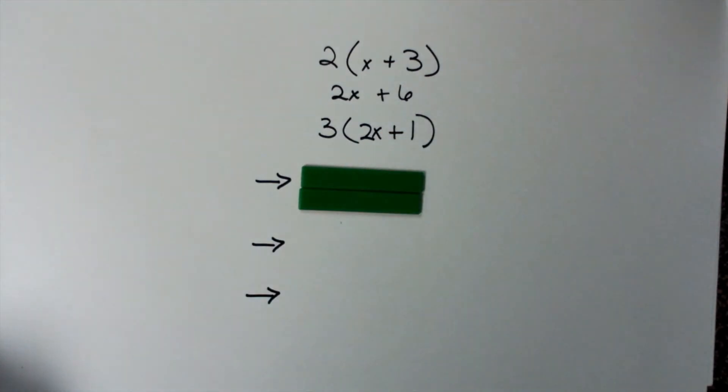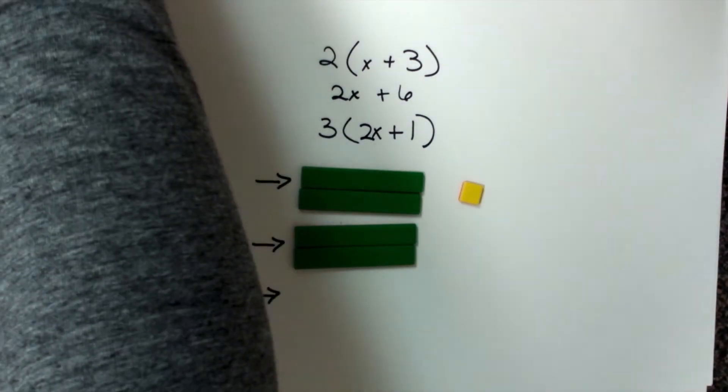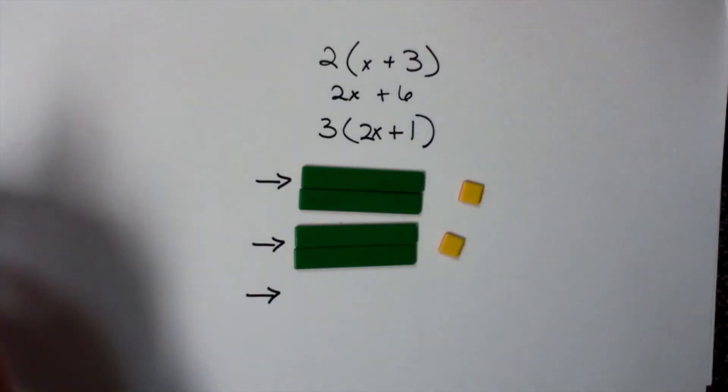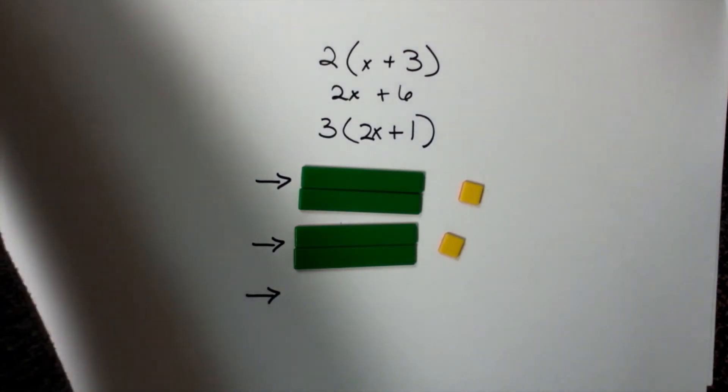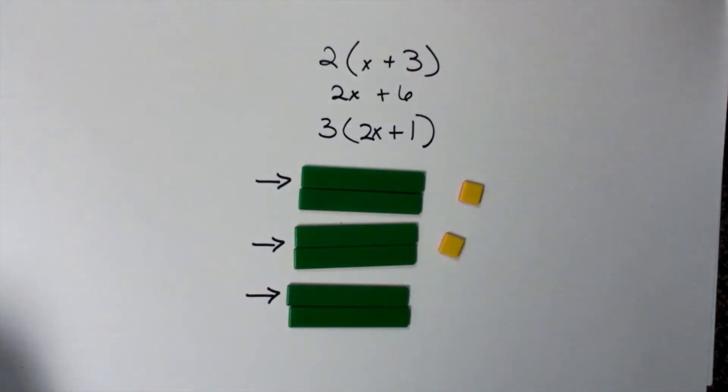So 2x plus 1. 2x plus 1. Again, 2x, and remember they're positive. Plus 1.